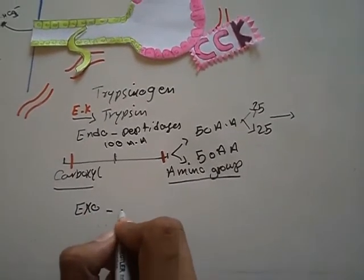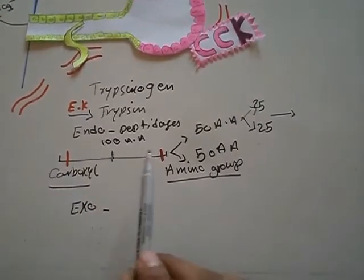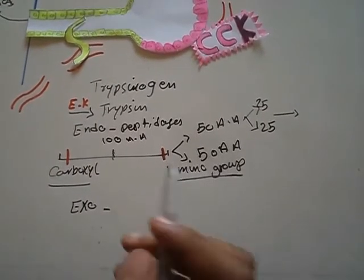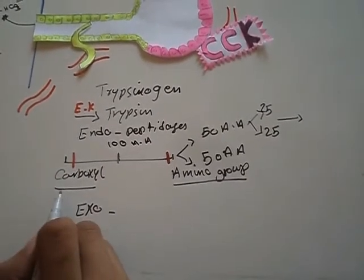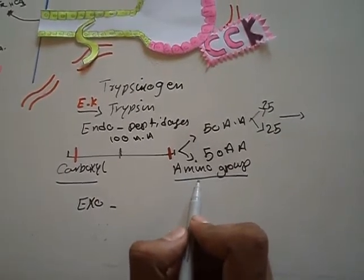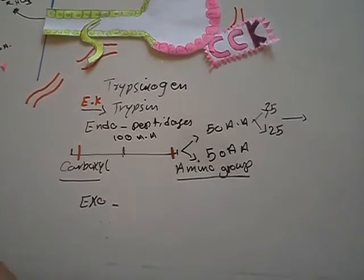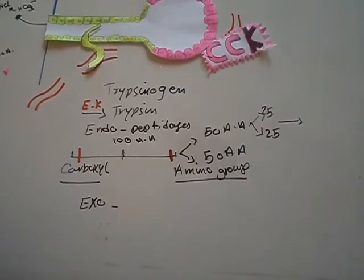The exopeptidases work on the margins, work on the carboxyl end of the amino acid chain and the amino group end, so we call it carboxypeptidase and aminopeptidase. This is breaking this and then the complete degradation of the proteins.